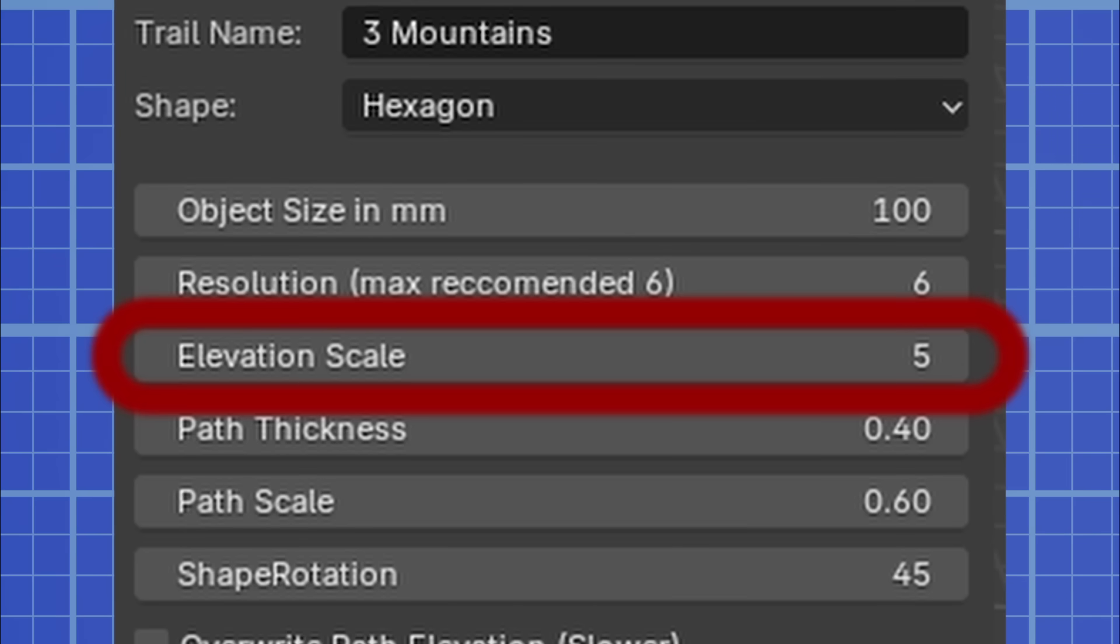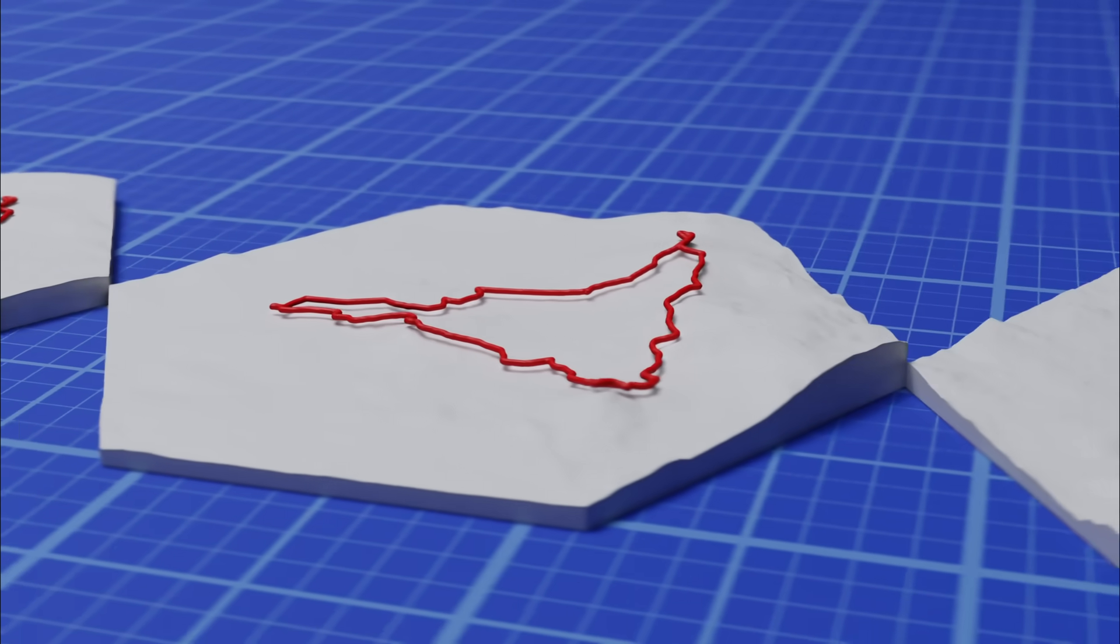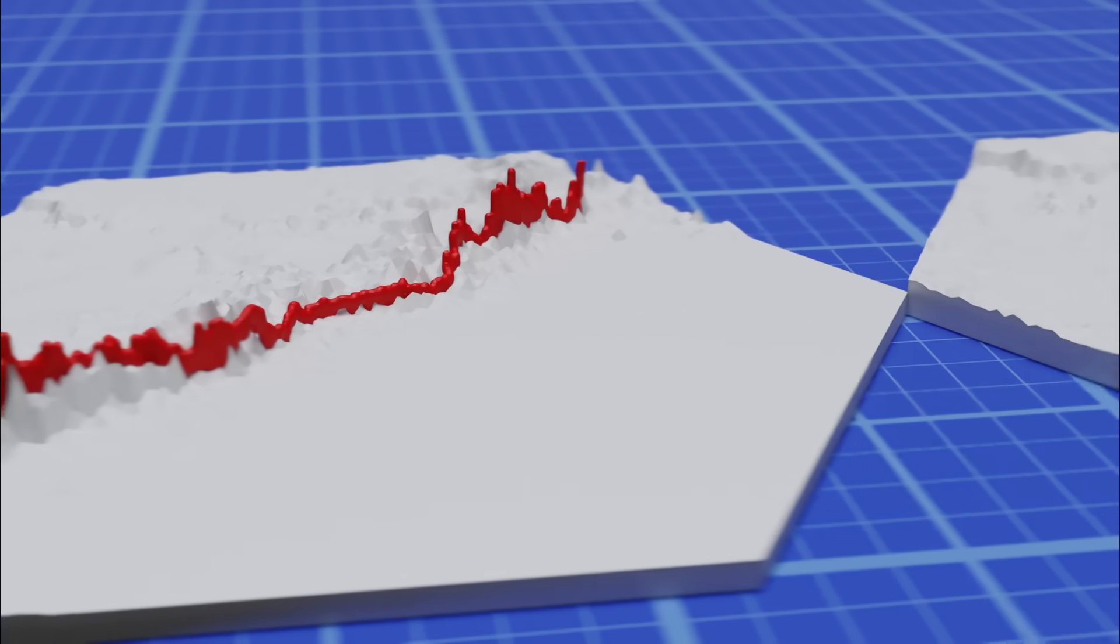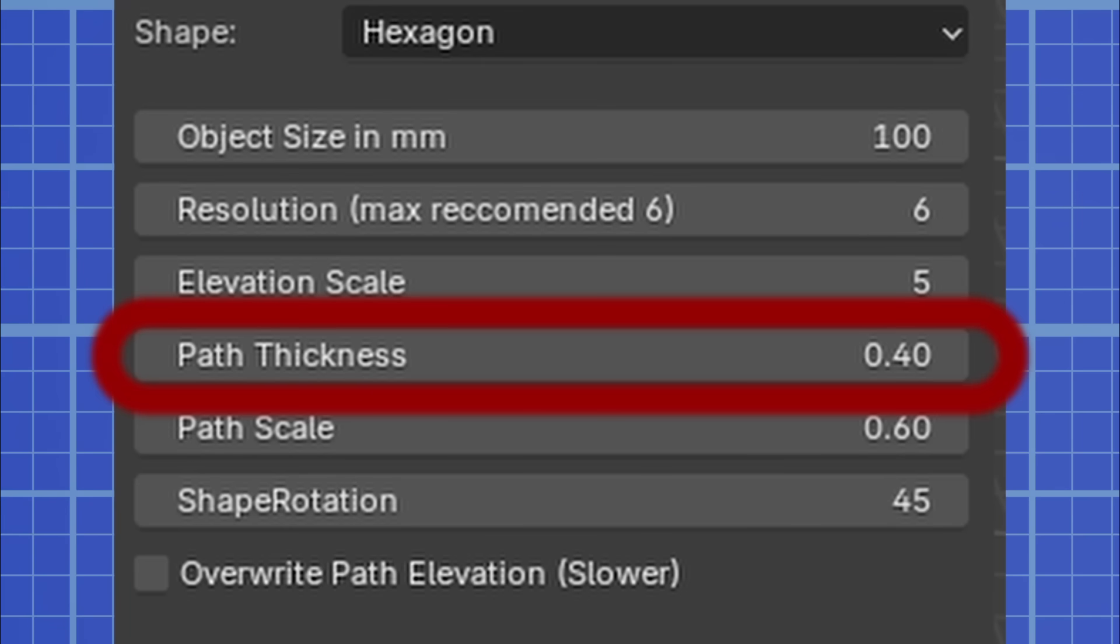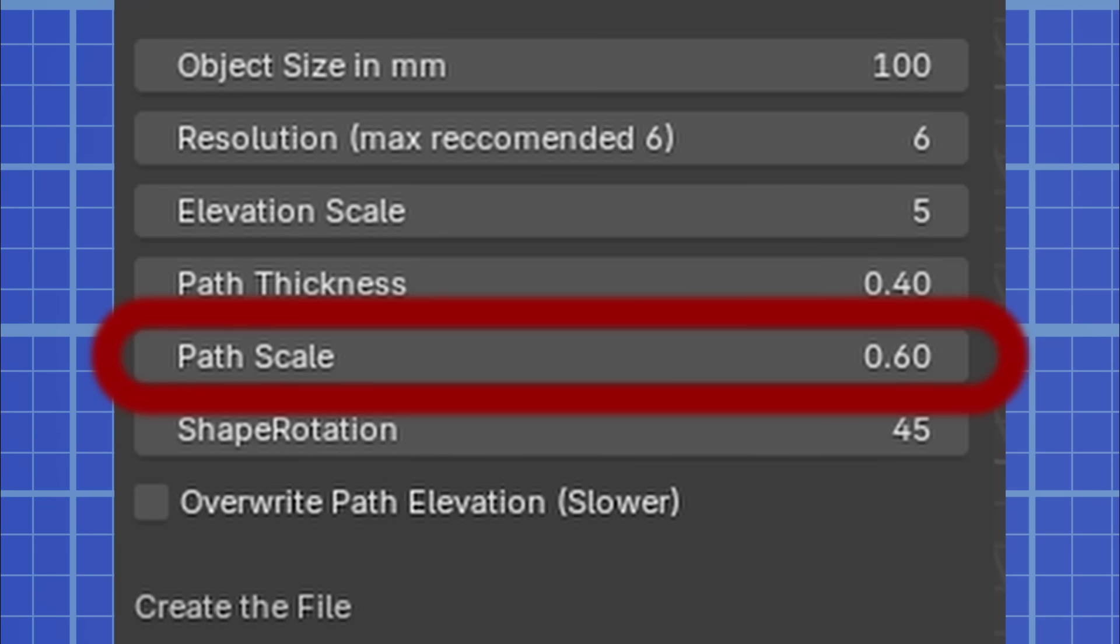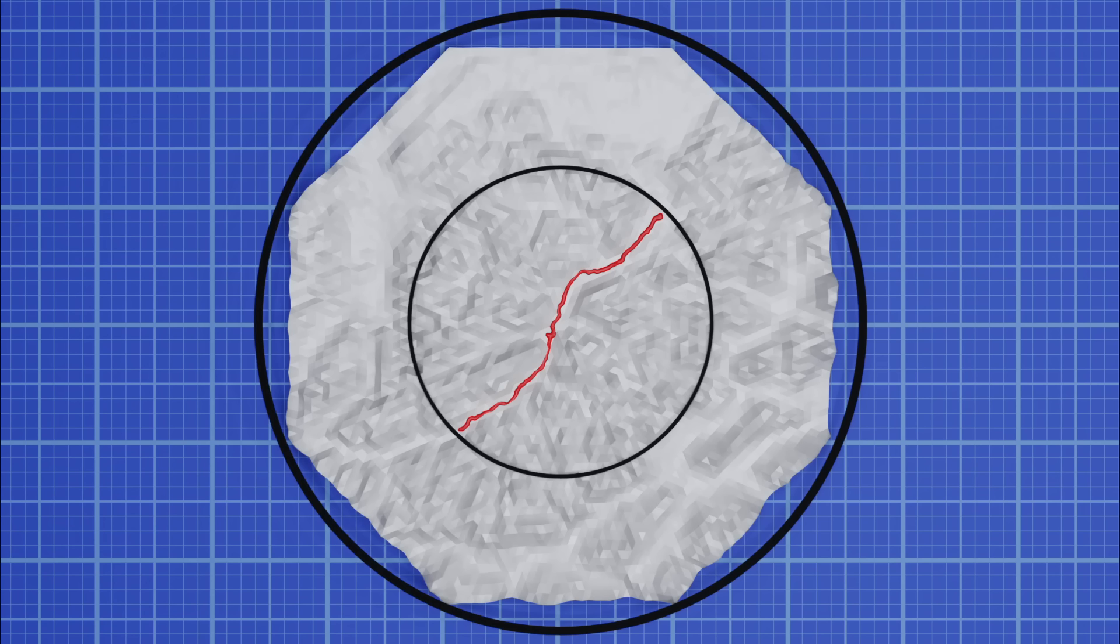The elevation scale allows you to add a multiplier to the terrain elevation. Use it to make flat maps more interesting or to smooth down steep landscapes. The path thickness determines how thick the path will be. The path scale determines how big the path will be inside of the map. A value of 1 means the path is as big as the map, which is not really recommended. A value of 0.5 means that it is only half the size of the map. I generally like 0.7 but it depends on the trail.